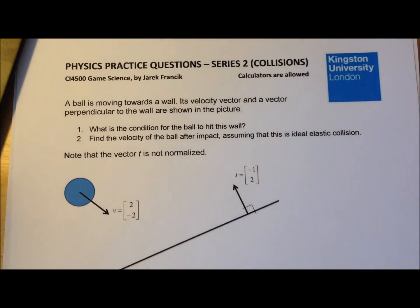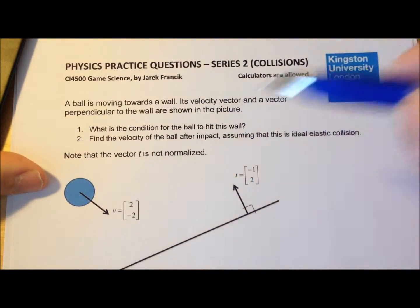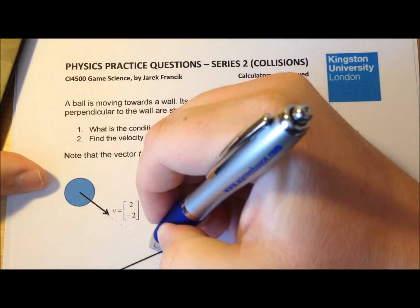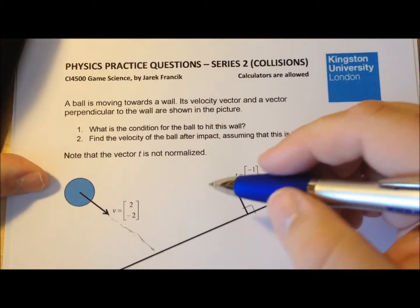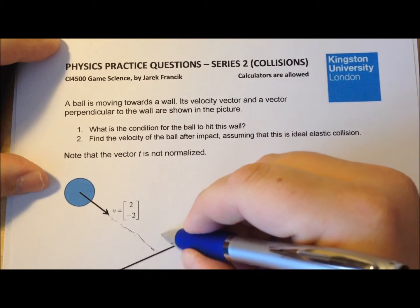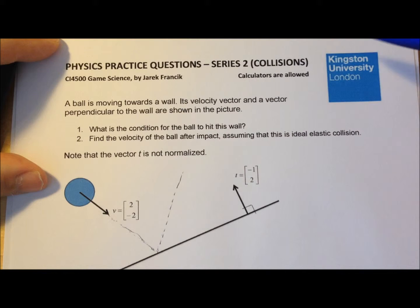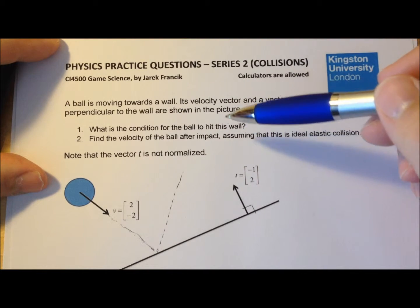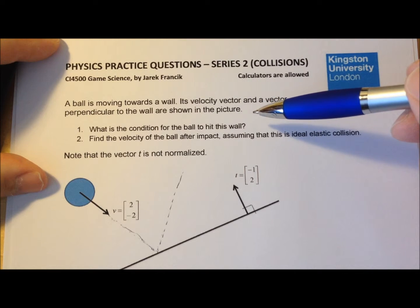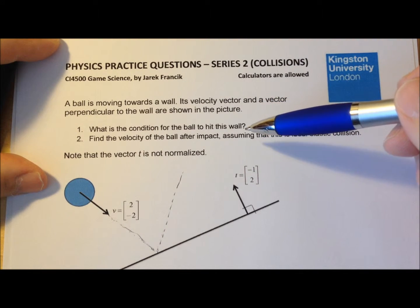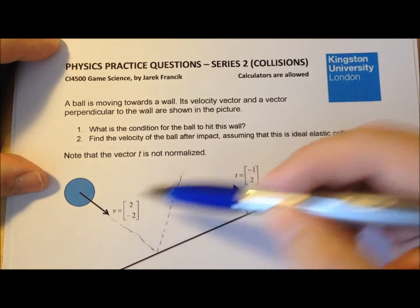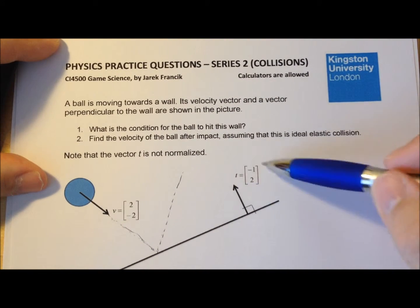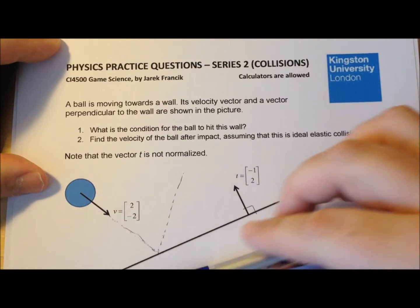In this short physics practice question, we have a ball with a given velocity vector which is moving towards a wall. In some moment it will hit the wall and then bounce away from the wall. The question is: what is the condition for the ball to hit this wall, and what is the final velocity after the ball impacts the wall? We have a velocity vector here, and also a vector showing the inclination of this wall.